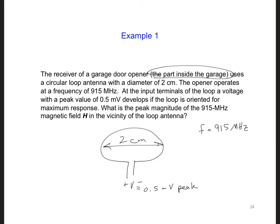And that develops if the loop is oriented for maximum response of the other part of the garage door opener, where we push the button from the car.